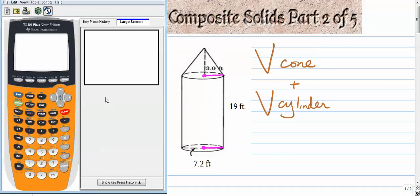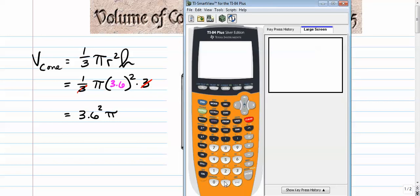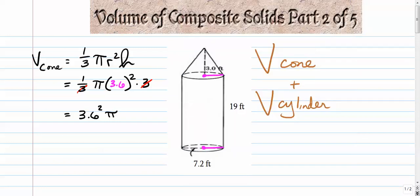So let's go to our calculator, and we'll see what we get. 3.6 squared times pi. This is the volume of the cone, 40.715 feet cubed. So that's V cone.